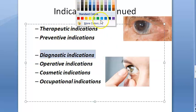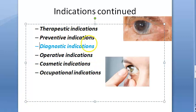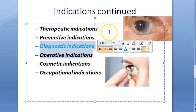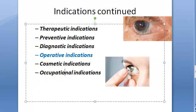Diagnostic indications include use during gonioscopy, electroretinography, fundus examination in irregular corneal astigmatism, fundus photography, and Goldman's three mirror examination. Operative indications include use during goniotomy operation for congenital glaucoma, vitrectomy, and endocular photocoagulation.